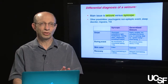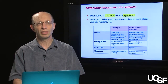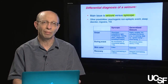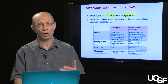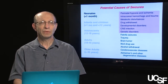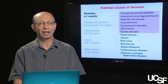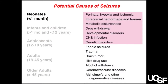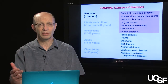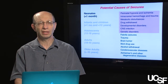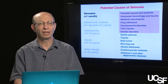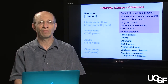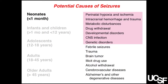Now let's assume we've concluded the patient has had a seizure. Let's consider briefly the potential causes, because the workup must be directed toward those causes. I've divided the potential causes into various age groups. For neonates — infants less than one month of age — causes range from perinatal hypoxia, drug withdrawal, CNS infection, and genetic disorders. Beyond one month, the category shifts to CNS infection, genetic basis, febrile seizures, and trauma.